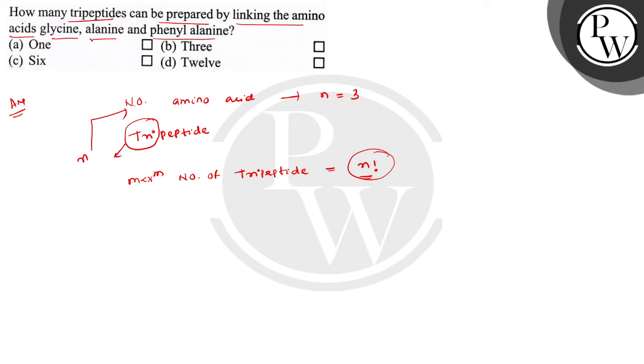There are three amino acids: glycine, alanine, and phenylalanine. Due to the different sequences of these amino acids, the tripeptides will be different. So the maximum number of tripeptides that can be formed is 3 factorial.